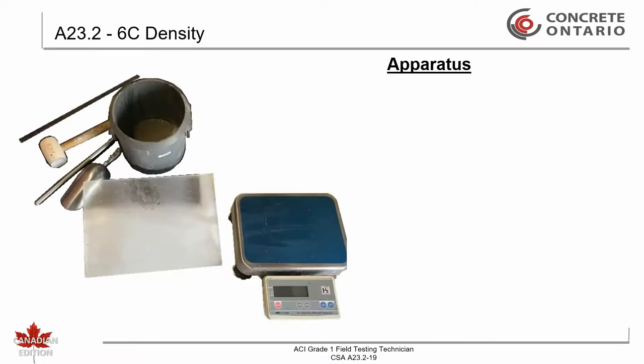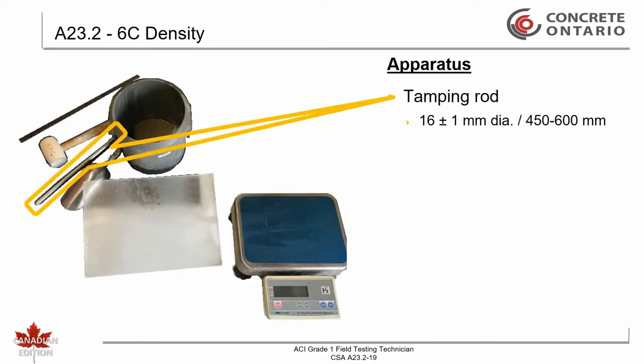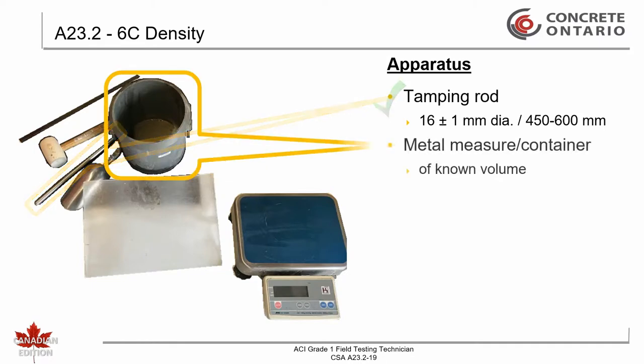The apparatus for this test consists of a steel rod 16 plus or minus 1 millimeter in diameter and between 450 and 600 millimeters in length. A metal container, also known as the measure. The minimum capacity of the measure required is dependent on the concrete aggregate size and shall conform to the requirements of Table 1.